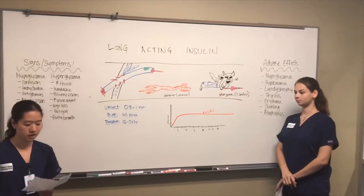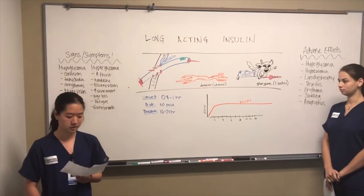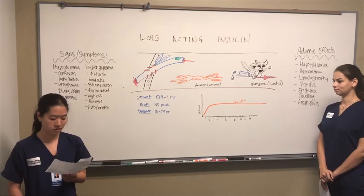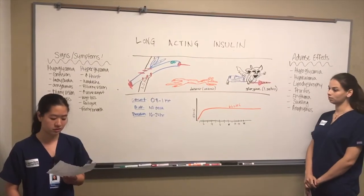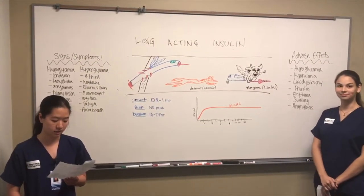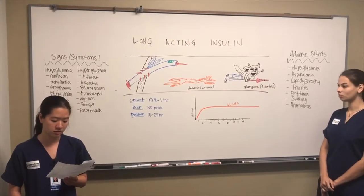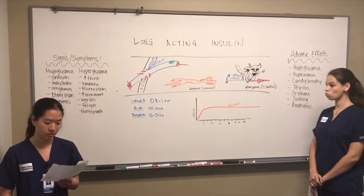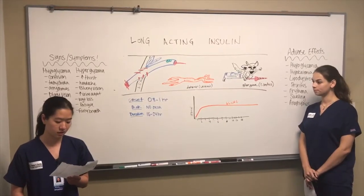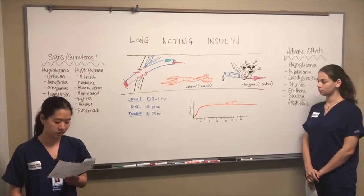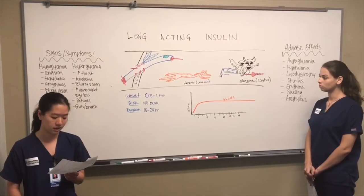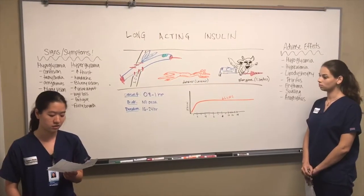There are two kinds of long-acting insulin. The first is insulin glargine. The doses are: for type 1, 0.2 to 0.4 units per kilogram once daily; and for type 2, 0.2 units per kilogram once daily. The second kind is insulin detemir, and the dose is 0.1 to 0.2 units per kilogram once daily, or 10 units once daily.